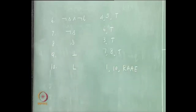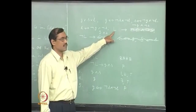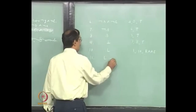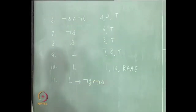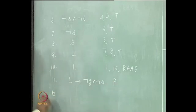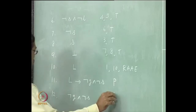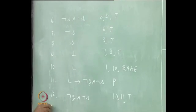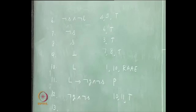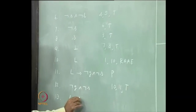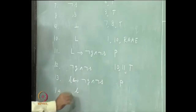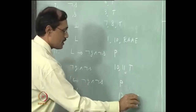Next, L implies this. Then it should be this. So line 11, L implies not-G and not-S - that is a premise. Line 12, not-G. Next, L - it is really modus ponens.